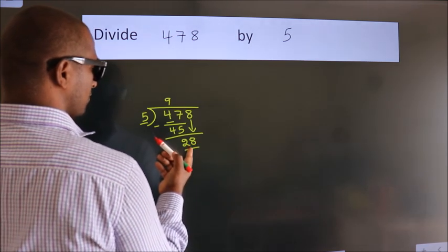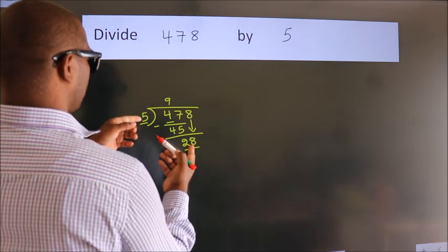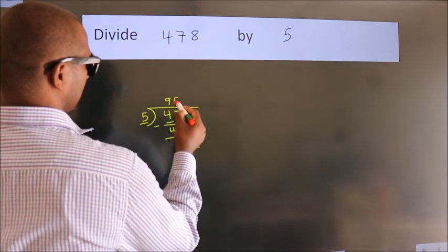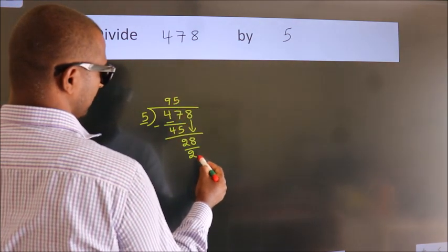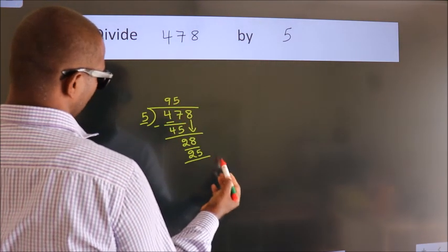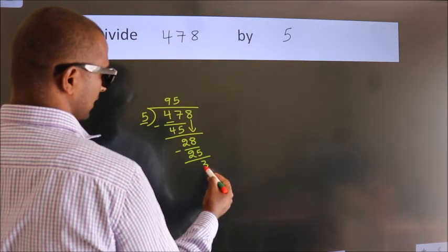A number close to 28 in 5 table is 5 fives 25. Now we subtract. We get 3.